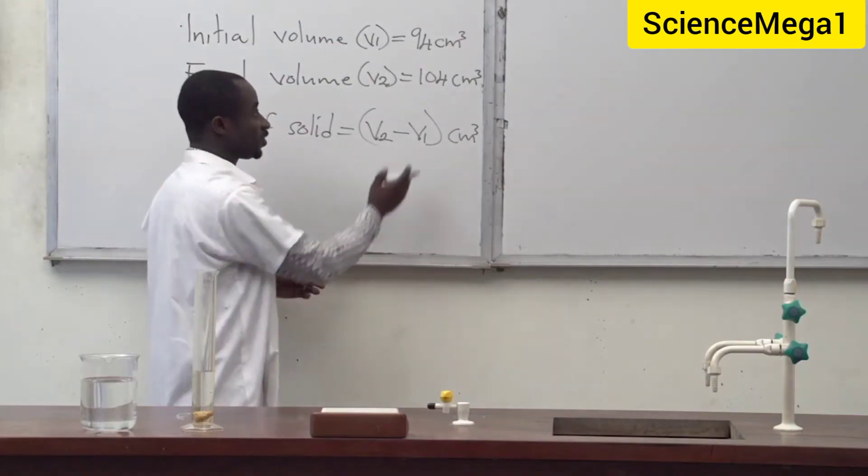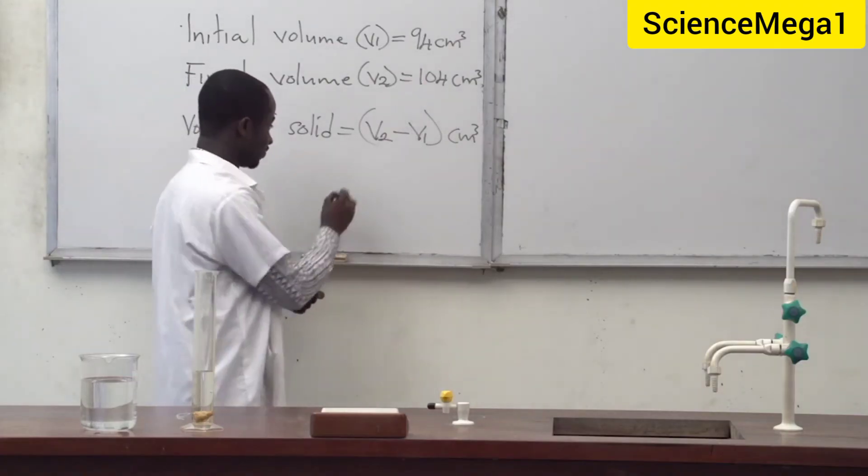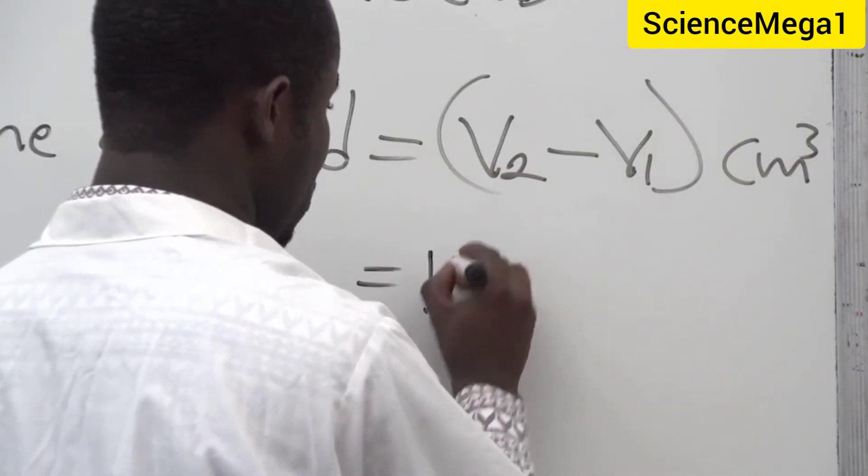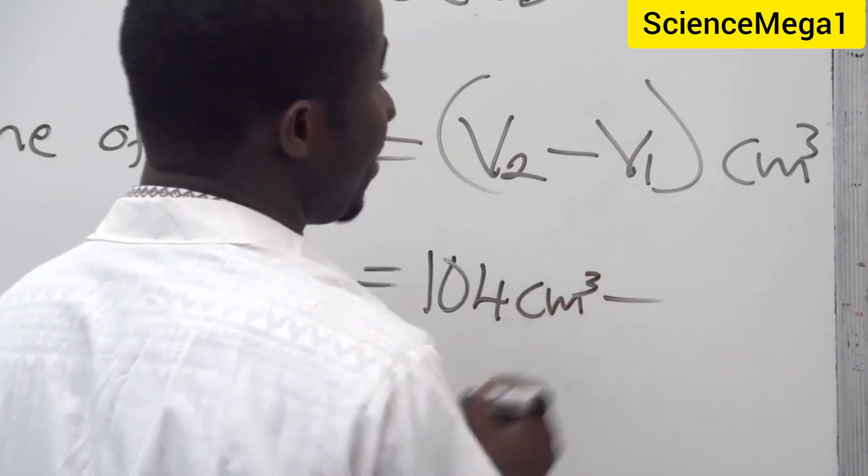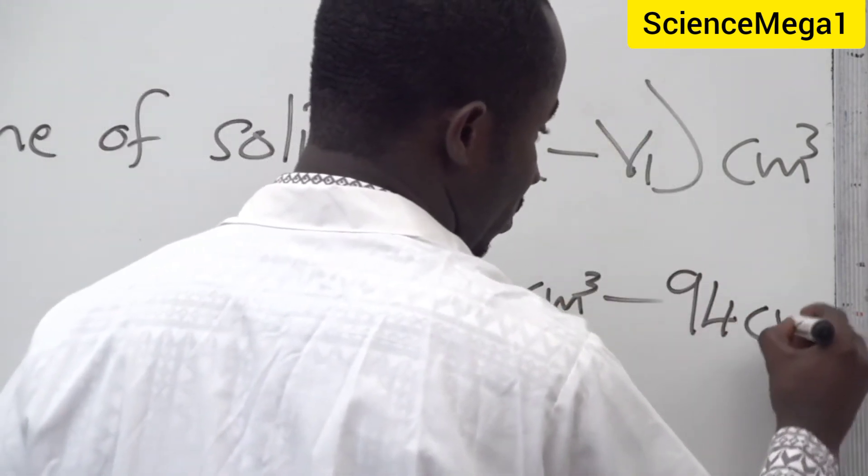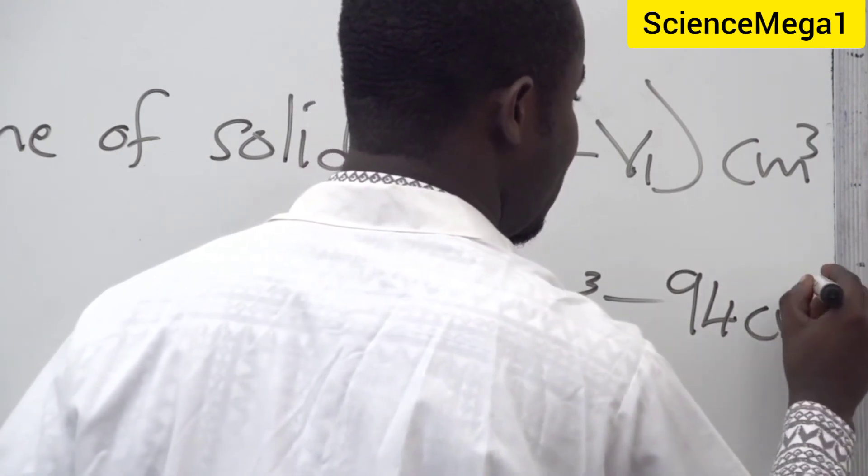Now at this point let us substitute the figures into the equation. So we have V2 which is equal to 104 cubic centimeter minus V1 which is 94 cubic centimeter.